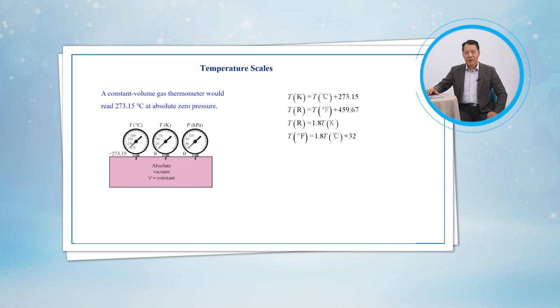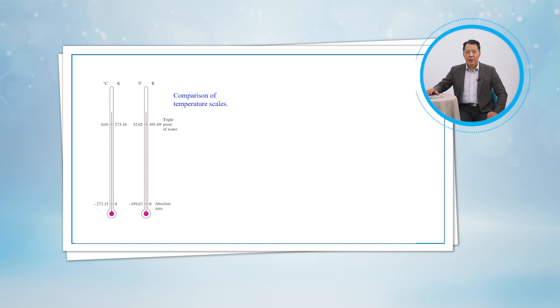The relationships among different temperature scales are shown here. This is the comparison of temperature scales, and this is the comparison of magnitudes of various temperature scales.